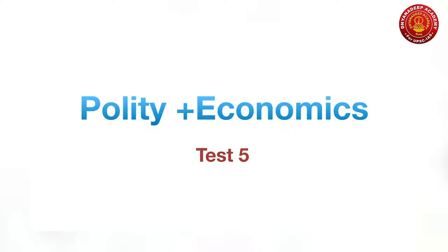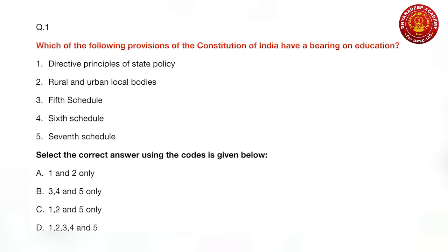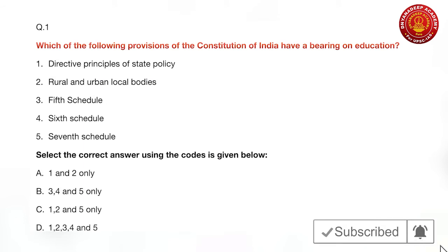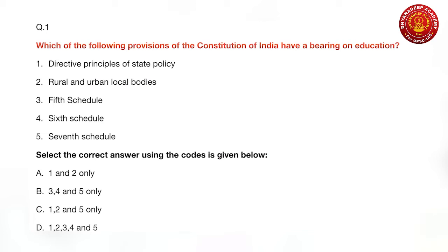Hello friends, let's start with test number five. The first question asks which provisions of the Constitution of India have a bearing on education. This relates to directive principles of state policy. Option B about rural and urban local bodies is very true — we have seen Zilla Parishad schools and municipal corporation schools everywhere.